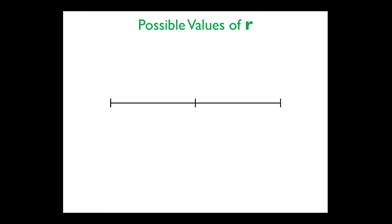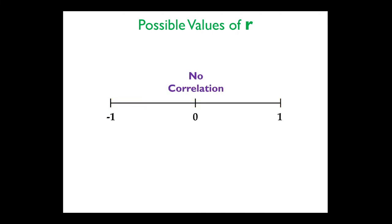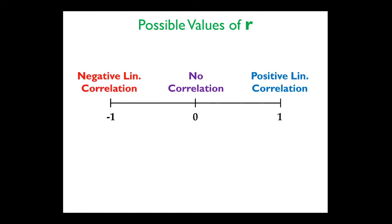When you calculate r: if r is close to zero, we say there's no correlation; if r is close to positive one, there's a positive linear correlation; and if r is close to negative one, there's a negative linear correlation. So a scatter plot trending downward would have r closer to negative one, and one trending upward would have r closer to positive one.